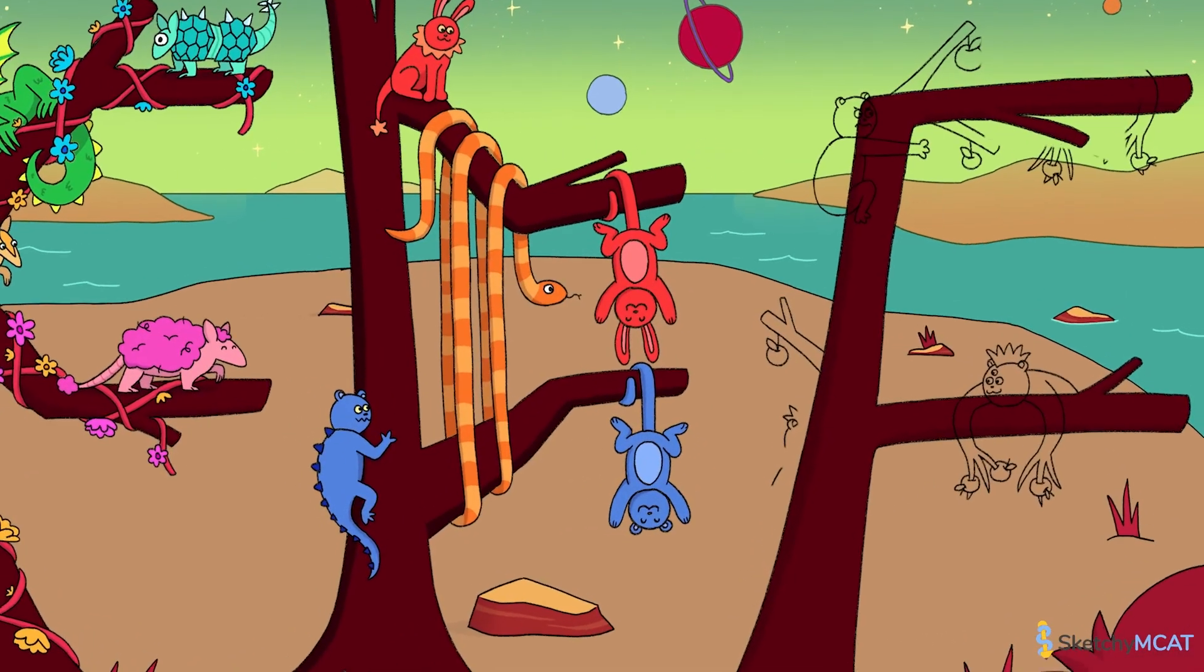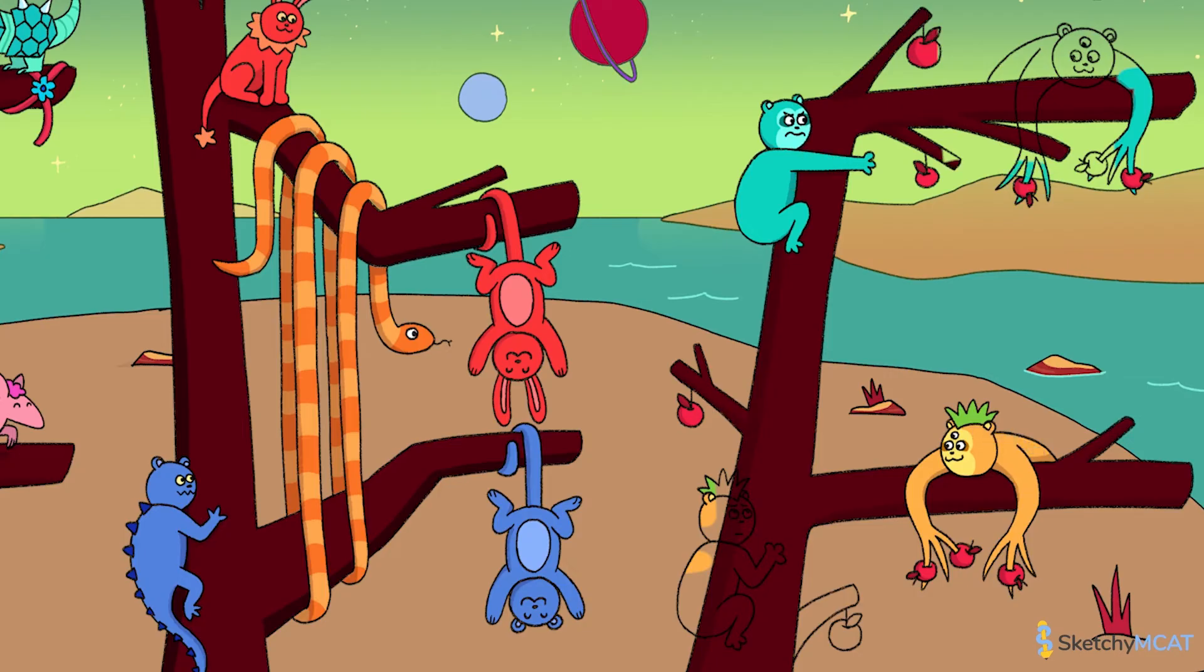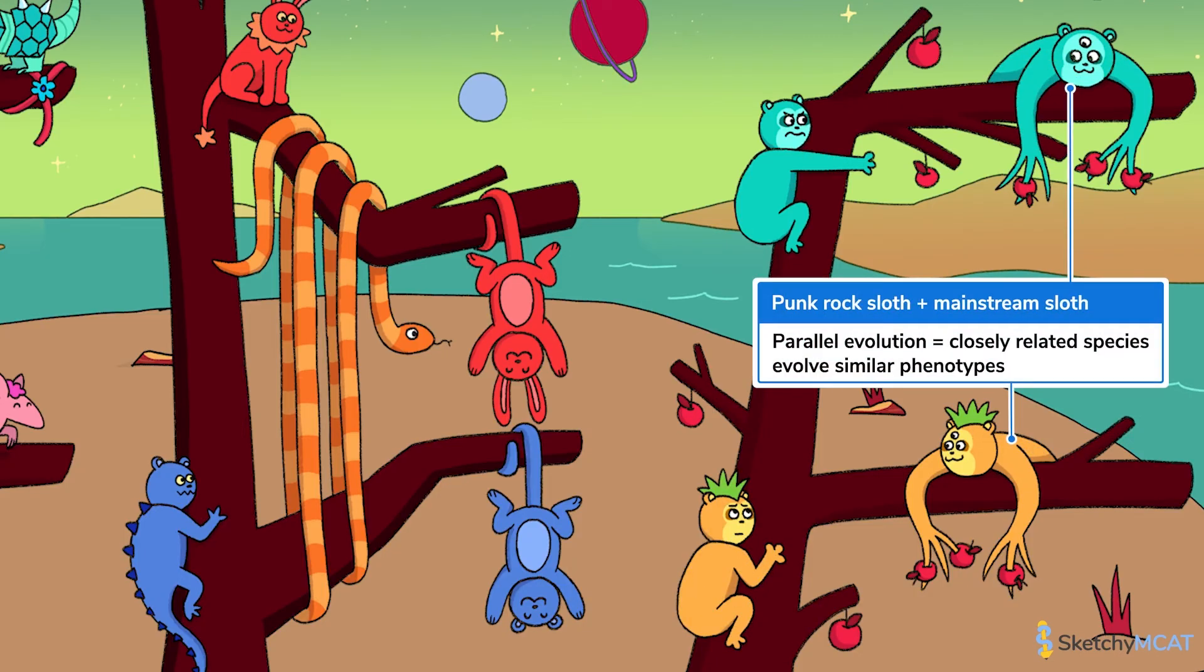Here, the punk rock space sloth and blue mainstream sloth have closely related ancestors hanging out at the branch points, and both face the selection pressure of needing to collect tasty space fruit for food. So both lineages evolved similar long toes for collecting food. Now, what selection pressure makes you grow a mohawk, and how do I make sure my great-great-great grandkids get one?